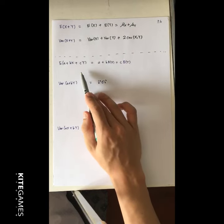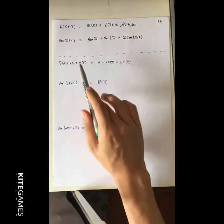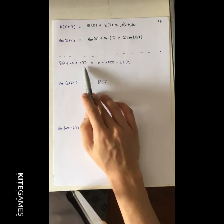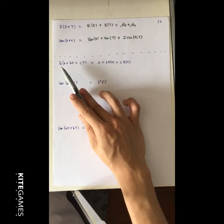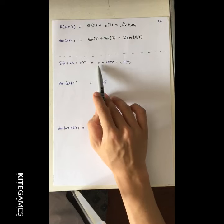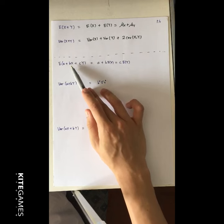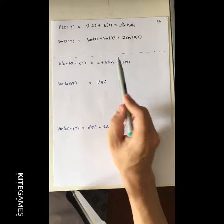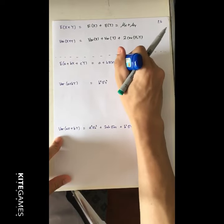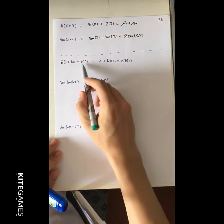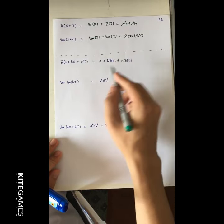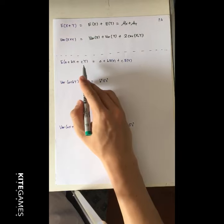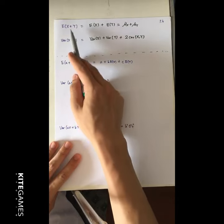Let's explore further relations. First, if we want to calculate the expected value of (a + bx + cy), where a, b, c are constants and x, y are random variables, this equals the expected value of a (which is just a constant a), plus b times E[x] (since b is a constant we can take it out), plus c times E[y]. So we can simply separate expected values term by term.